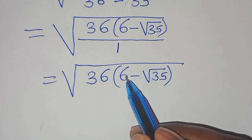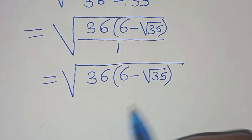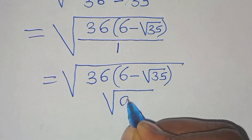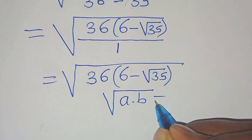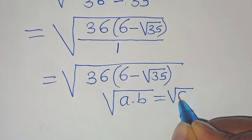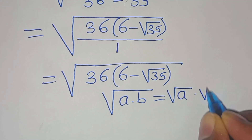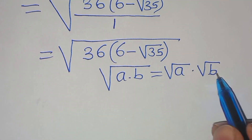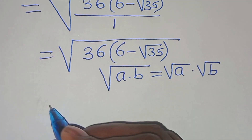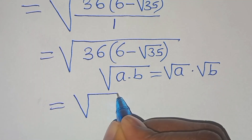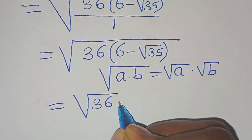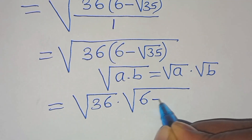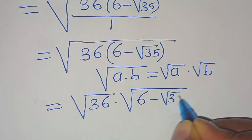Square root of 36 times 6 minus square root of 35 is in the form of square root of a multiplied by b, which we can express as the individual square root of a multiplied by square root of b. Applying this identity, we have square root of 36 multiplied by square root of 6 minus square root of 35.